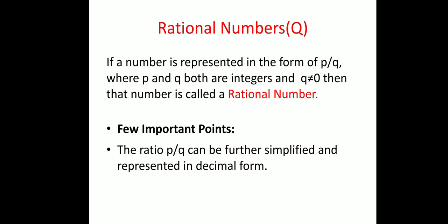To summarize: two conditions must be verified for a number to be a rational number — P and Q both should be integers (numerator and denominator both should be integers) and Q should not be equal to 0. On the basis of this definition, let us note a few important points. The ratio P/Q can be further simplified and represented in decimal form, meaning if a number can be represented in decimal notation, it can also be a rational number.